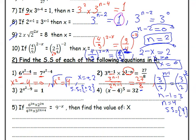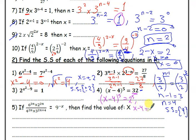Exercise 4: x minus 4 all to the power 5 equal 32, meaning 2 to the power 5. Same power on both sides, so x minus 4 equal 2, and x equals 6. Solution set equals {6}.